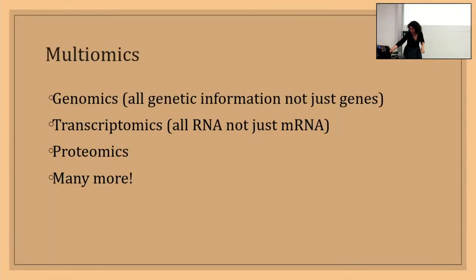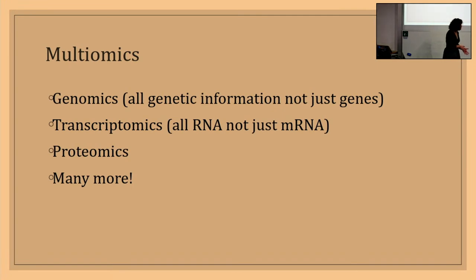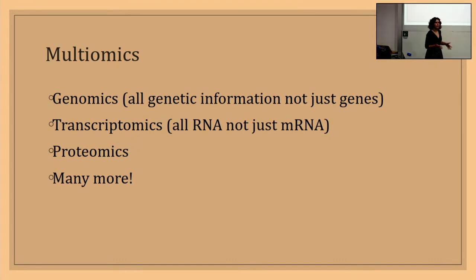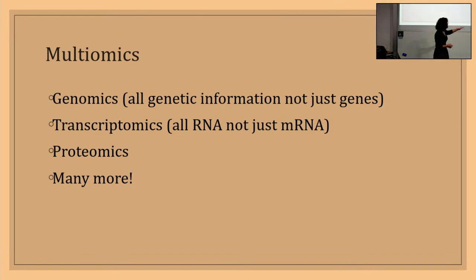This leads quite nicely into the idea of multi-omics — the idea that you can have different kinds of omics for different kinds of data. We have genomics, transcriptomics, and proteomics. Genomics is all the genetic information material, not just genes, because there is genetic material that isn't genes. Transcriptomics is all RNA, not just messenger RNA. And proteomics is the data related to proteins. This list isn't exhaustive — there are many more, and subcategories of each. For example, there's metagenomics, which is all of the genetic material of every single organism in an environment. Most of the research I do is in metagenomics.